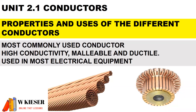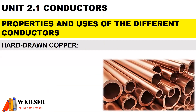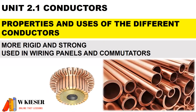For copper, it is the most commonly used conductor. It has high conductivity, is malleable and ductile, and is used in most electrical equipment. For hard-drawn copper, it is more rigid and strong, and is used in wiring panels and commutators.